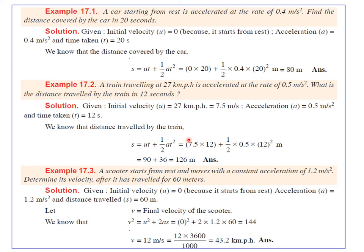Problem 2: A train traveling at 27 km/h is accelerated at 0.5 m/s². What is the distance traveled in 12 seconds? The initial velocity is 27 km/h, which converts to 7.5 m/s. Substituting u = 7.5 m/s, a = 0.5 m/s², t = 12 s into s = ut + ½at², we get s = 126 meters.